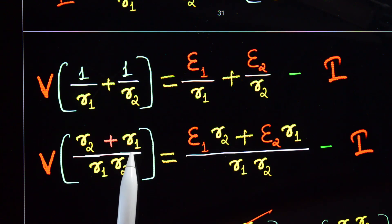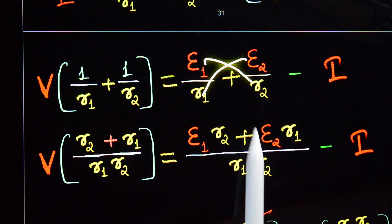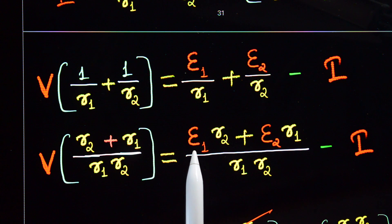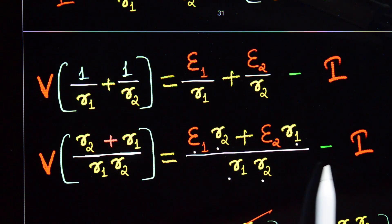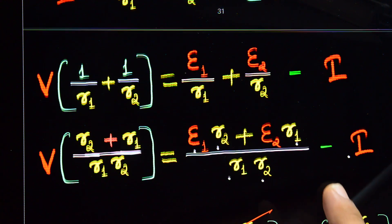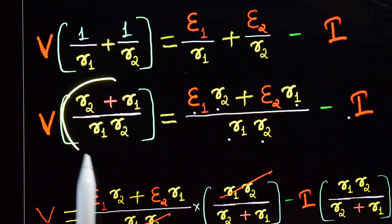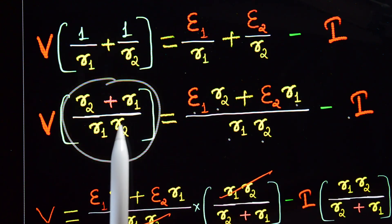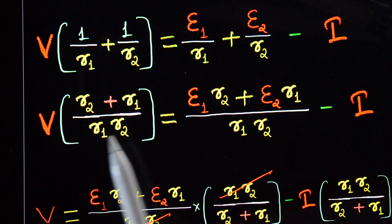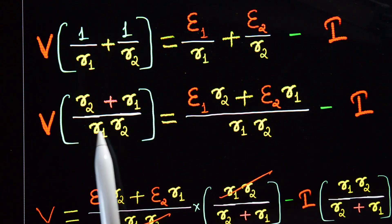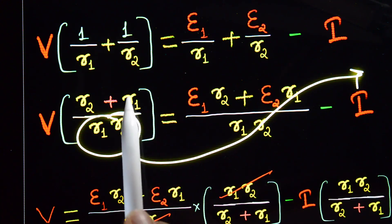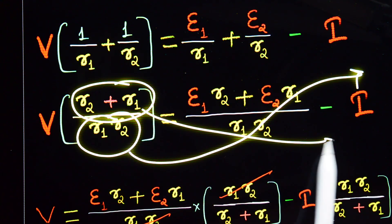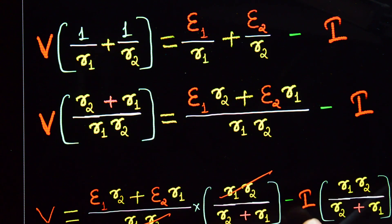Cross-multiplying, the left side becomes v·(r2 + r1) / (r1·r2), and the right side is (e1·r2 + e2·r1) / (r1·r2) minus i. Multiplying through by r1·r2 / (r1 + r2).